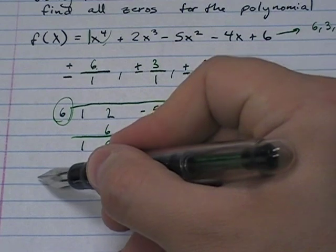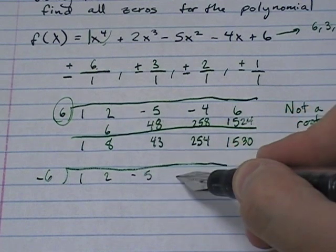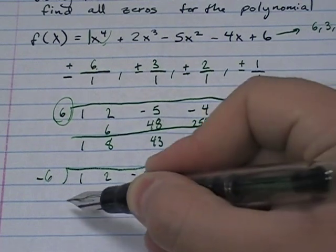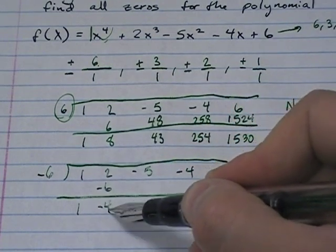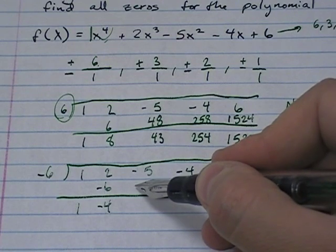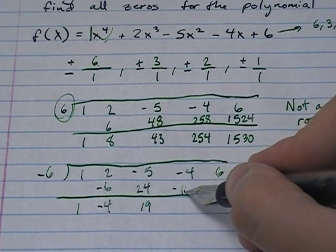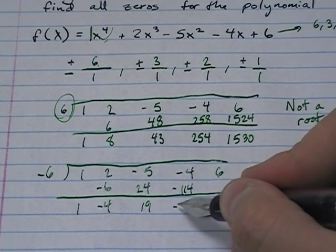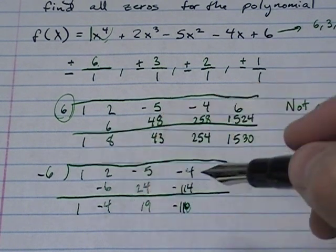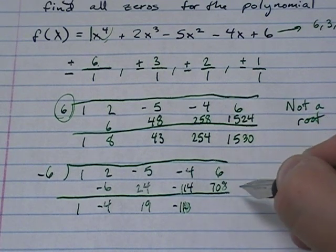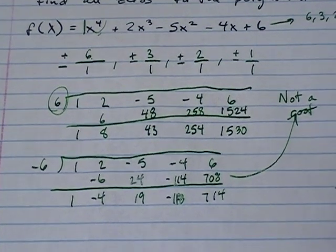Now we try negative six using the same coefficients: one, two, negative five, negative four, and six. Copying and multiplying gives negative four; multiplying gives 24; 24 minus five is 19; multiplying by negative six gives negative 114; adding negative four gives negative 118; negative 118 times negative six is 708; and six plus 708 is 714. Not a root.